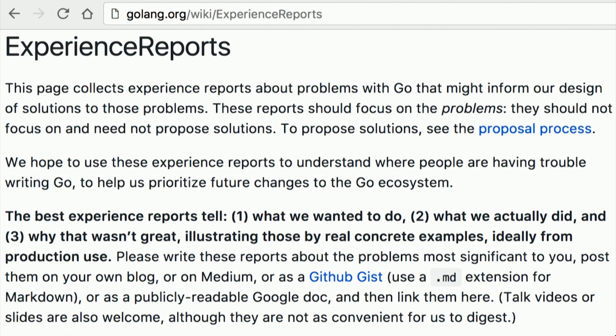These reports are the raw material for the Go 2 proposal process and we need all of you to write them to help us understand your experiences with Go. There are half a million of you working in a broad range of environments and not that many of us. Post them on your own blog, on Medium, as a GitHub Gist, or as a Google Doc, and then add a link to our new wiki page which is named Experience Reports.